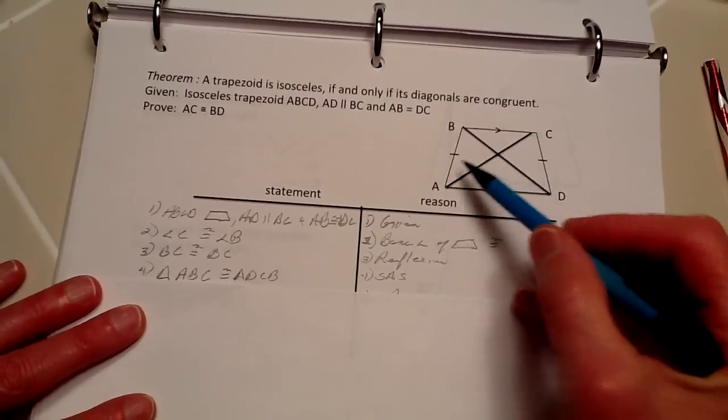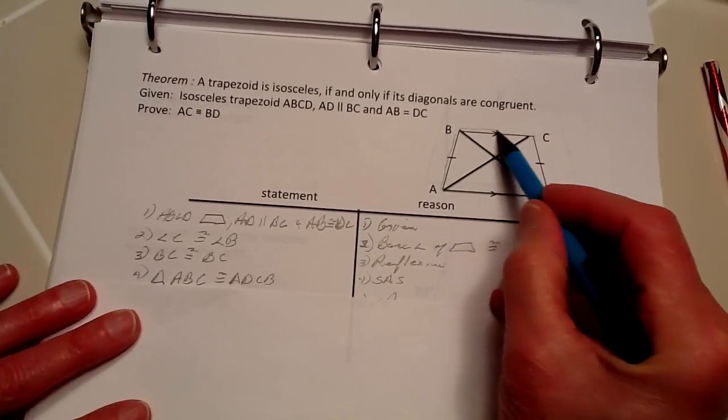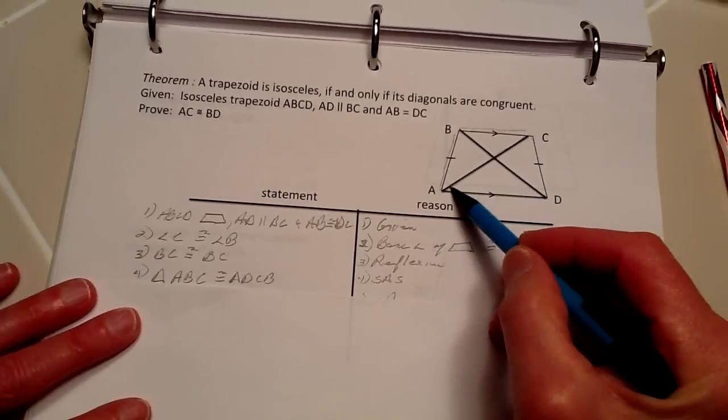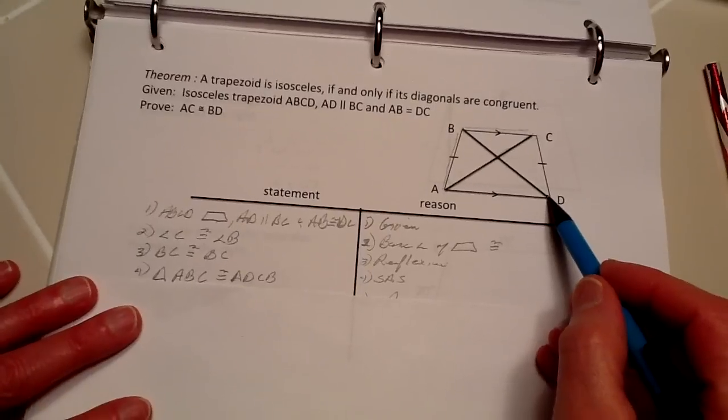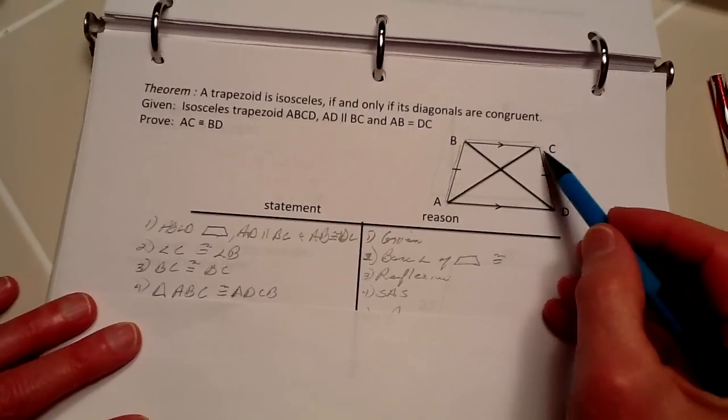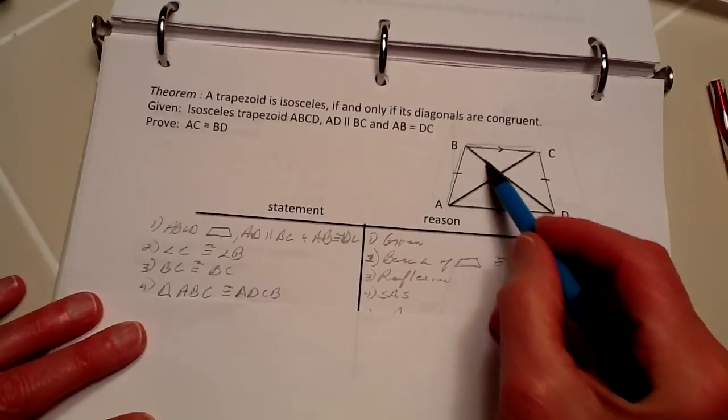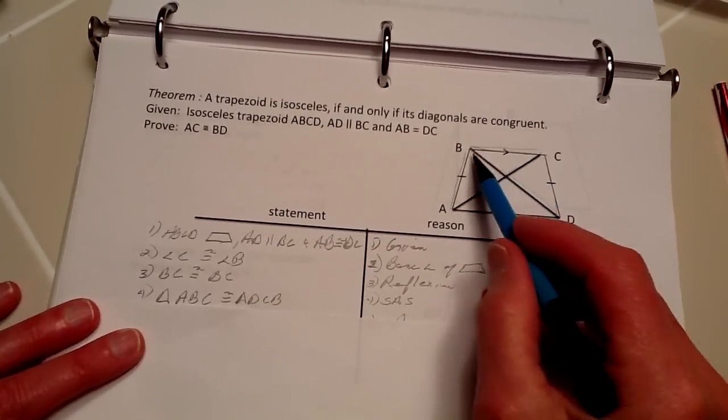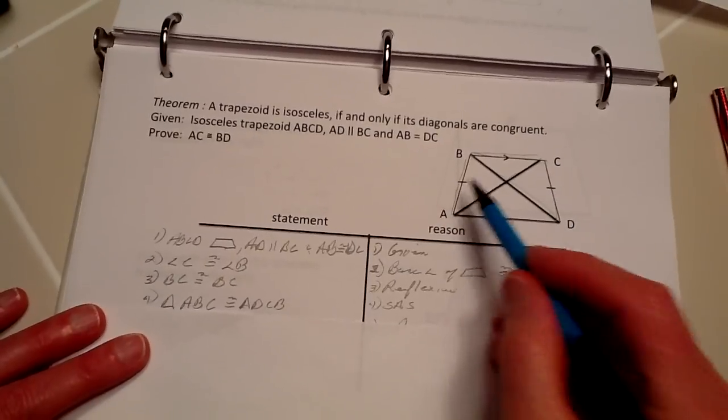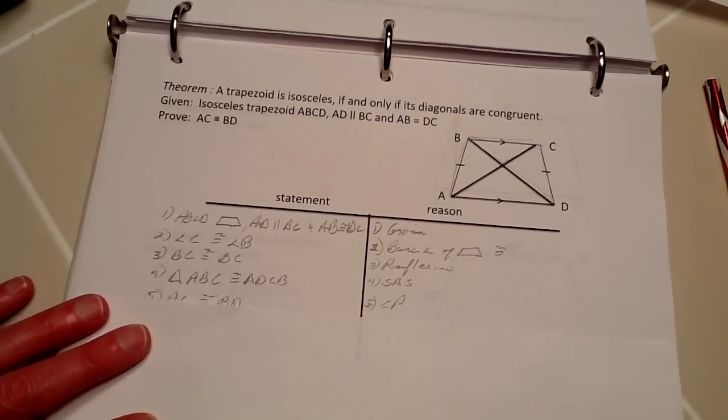Next, we know that triangle ABC is congruent to triangle DCB. We have the common side BC here, these congruent angles, and these congruent sides. So therefore, we have side-angle-side showing their congruency.